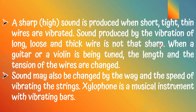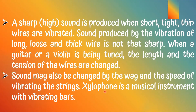Sound produced by the vibration of long, loose, and thick wire is not that sharp. When a guitar or violin is being tuned, the length and the tension of the wires are changed. Sound may also be changed by the way and speed of vibrating the strings. A xylophone is a musical instrument with vibrating bars — it is an instrument that produces musical sounds by vibrating bars.